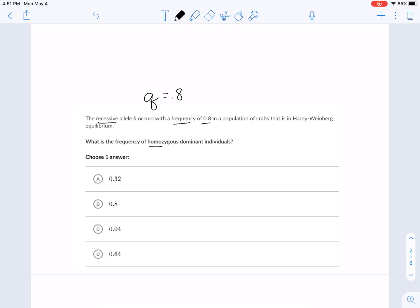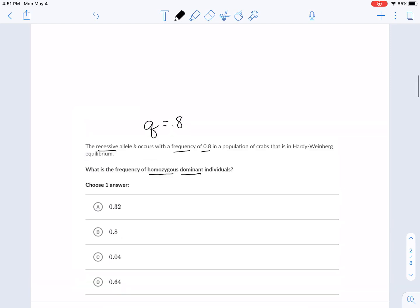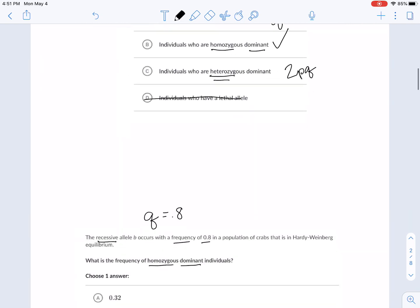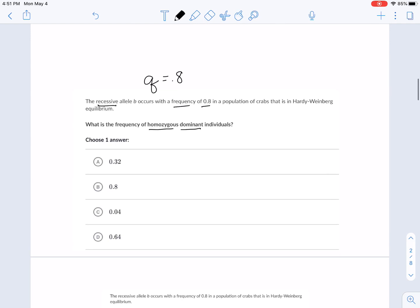In the population of crabs, it's in Hardy-Weinberg equilibrium. So what is the frequency of homozygous dominant? How do we get homozygous dominant? What represents homozygous dominant? Homozygous dominant is represented by P squared. We want to know this. This is the information that we have. This is the information that we were asked for.